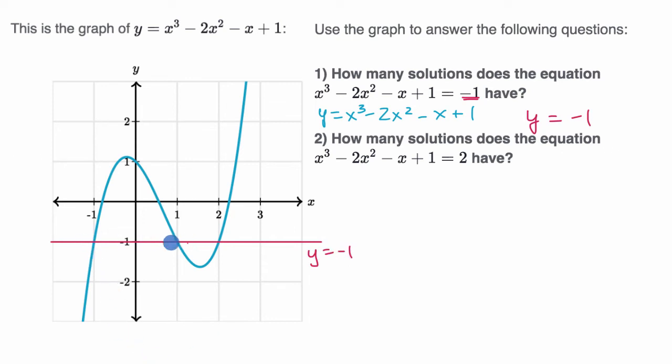And so every time they intersect, that means we have a solution to our original equation. And they intersect one, two, and three times. So this has three solutions.